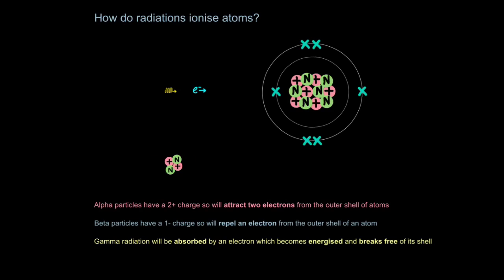So alpha particles have a two plus charge and that's because they have two protons. So what happens is as they basically pass nearby atoms the two plus charge attracts two electrons to it. So an alpha particle will strip two electrons away from the outer shell of an atom leaving the atom with a two plus charge. Now this atom is charged it can cause problems. For example if this was an atom in a DNA molecule having a charged atom might cause it to clump together or unwind and cause all sorts of problems when expressing your genes it could lead to cancer. So alpha particles have a two plus charge so will attract two electrons from the outer shell of atoms.